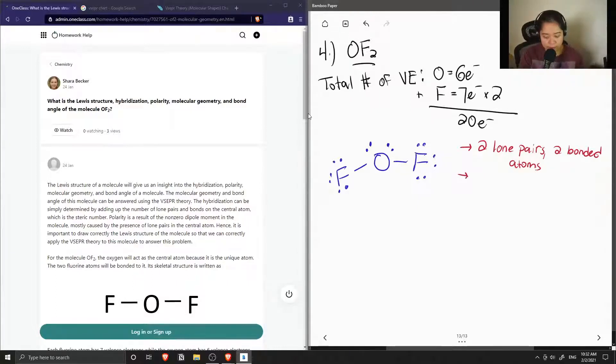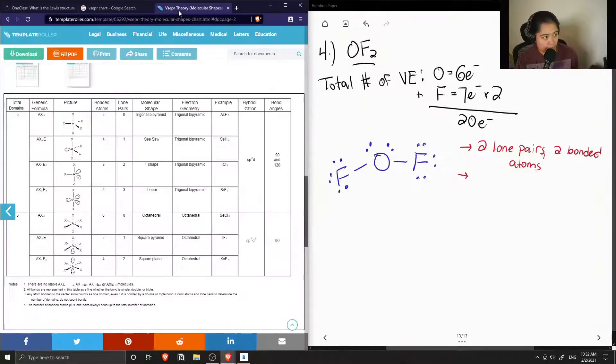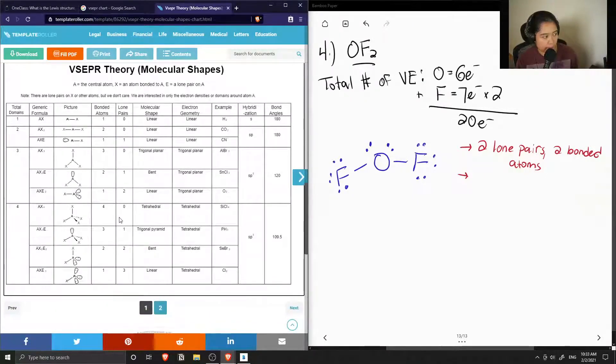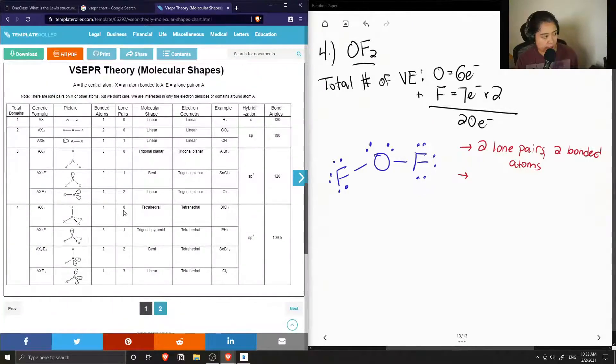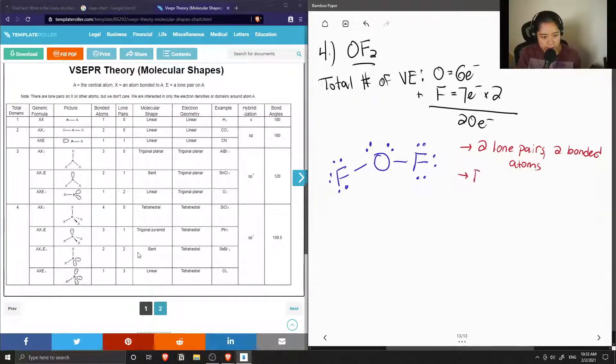Using a VSEPR table, we can find out its molecular shape and electron geometry. When we have two lone pairs and two bonded atoms, we have a bent molecular shape and a tetrahedral electron geometry.